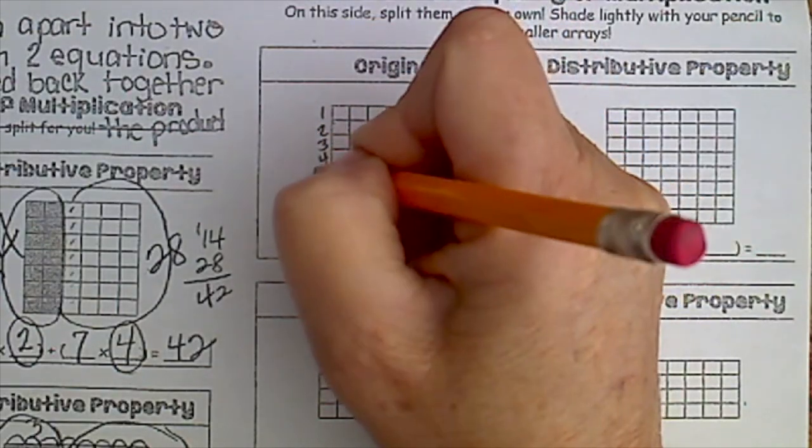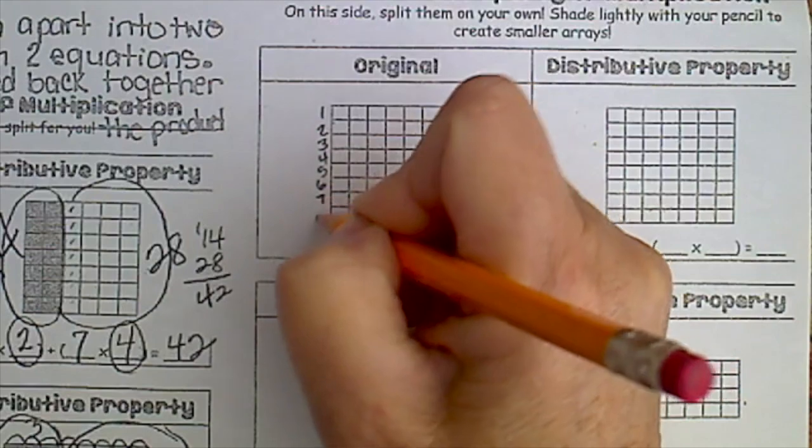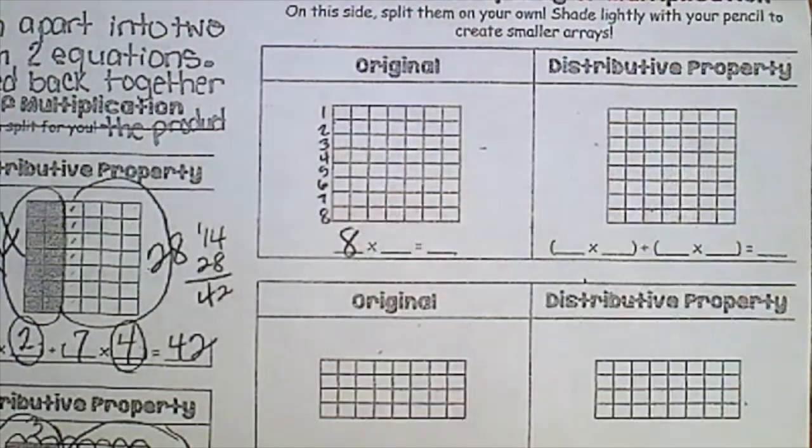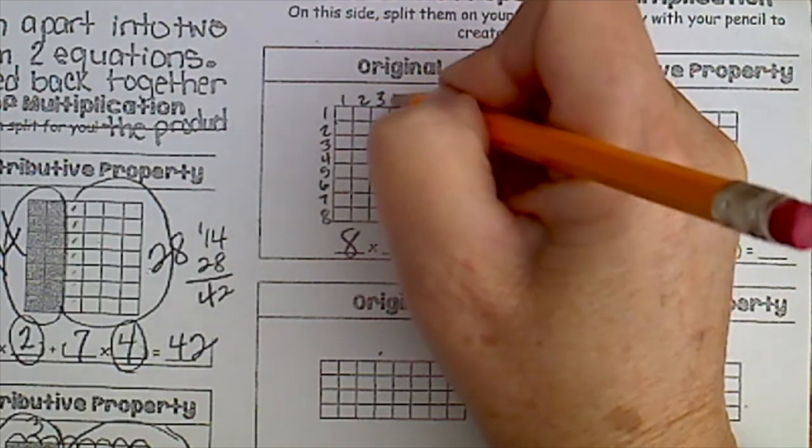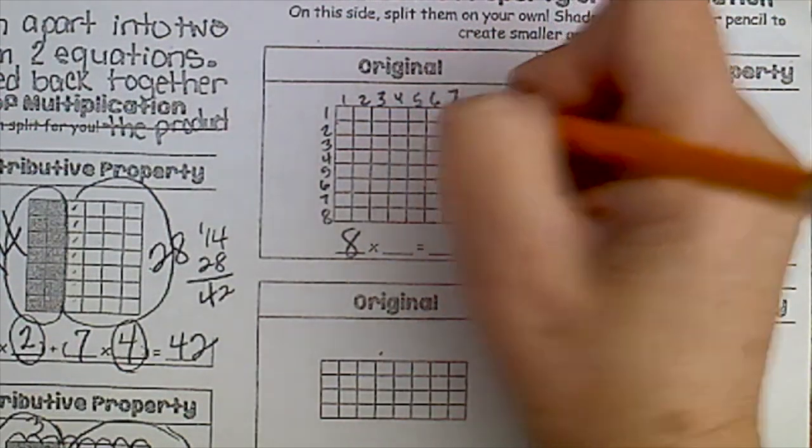This time it's eight rows, and then how many columns. Seven columns. Maybe you don't know what eight times seven is, that's a hard one.